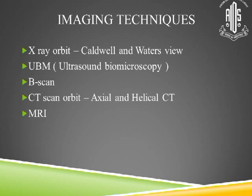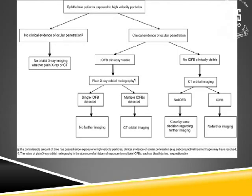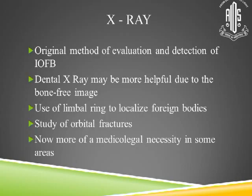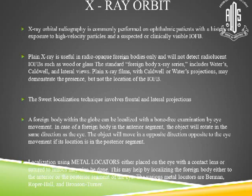The different imaging techniques start with X-rays, which have not been used very much in recent times because of newer imaging techniques, followed by UBM, B-scan, CT, and MRI. X-ray is the original method of evaluation and detection. A dental X-ray can sometimes be more helpful. You use a limbal ring to localize the foreign body. X-rays are used to study orbital fractures and are now more of a medico-legal necessity. They are performed for patients with a history of exposure to high-velocity particles or suspected intraocular foreign body. X-rays are very useful for radiopaque foreign bodies, but not for radiolucent foreign bodies like wood or glass. The two projections used are the Caldwell's and Waters view.